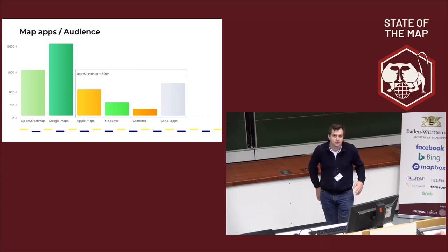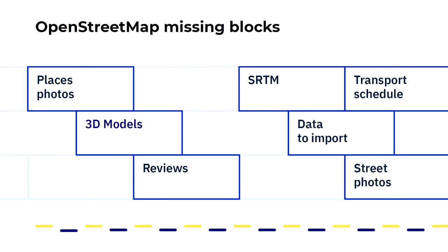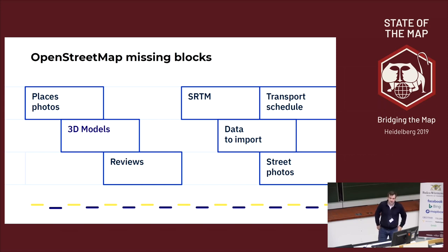We need to overcome many difficulties we have with OpenStreetMap, and I think we deserve a more open world in the 21st century. Let's take a look at what I mean by missing blocks. We all know that not all data can fit OpenStreetMap. We could say it's not a business of OpenStreetMap to deal with that data — like place photos, SRTM data, public transport schedules, place reviews, 3D buildings, and other micro-mapping stuff. People's expectations are quite high and they expect full service and great experience.